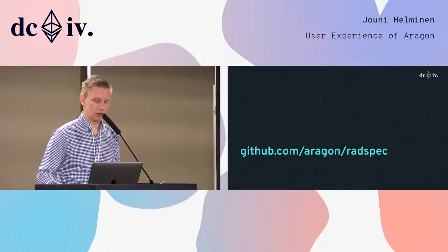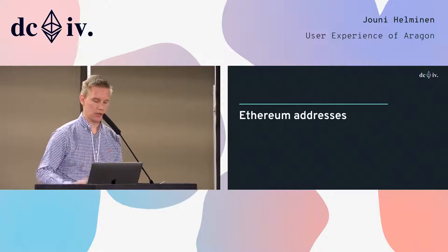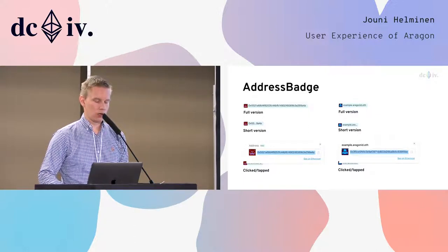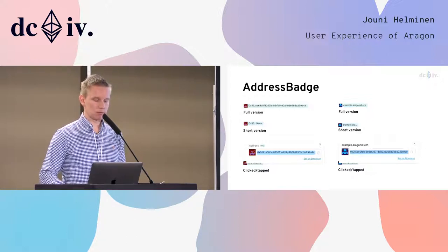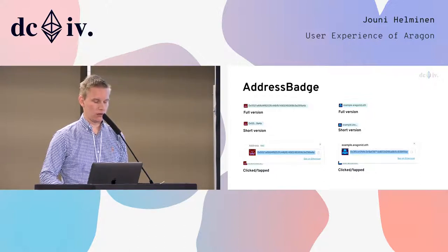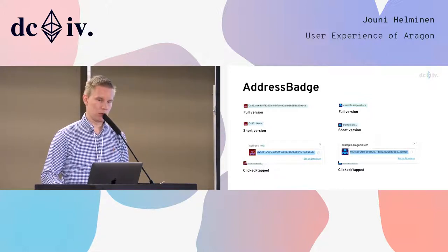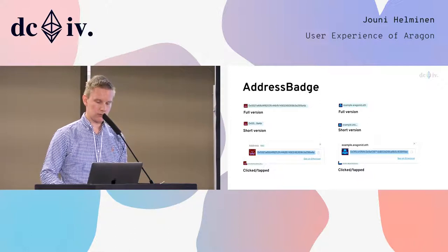Another component for decentralized apps is Ethereum addresses — they're these really long, ugly strings right now. We built an address badge component where you have a clickable element that can show the whole address or a smaller version of it, especially on mobile. You'll see the identicon block, and then you can just click on it and copy the address directly, which is a very common use case — saves you a couple of clicks. Same with ENS names and so on — another blockchain-specific component.